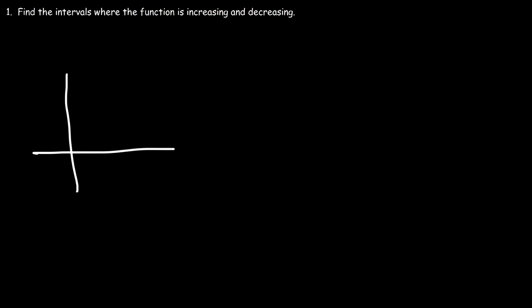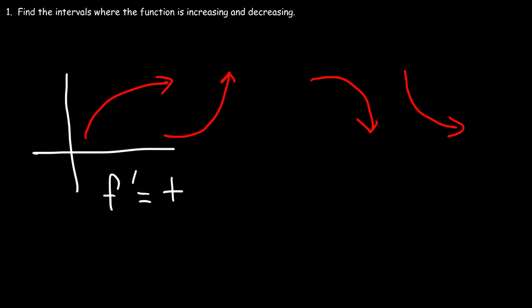In this video we're going to focus on finding the intervals where a function is increasing and when it's decreasing. Any time the graph is going upward, the function is increasing and the first derivative is positive. When the graph is going down, the function is decreasing and the first derivative will be negative. So any time the function is decreasing the slope is negative, and when it's increasing the slope is positive.